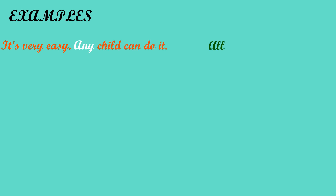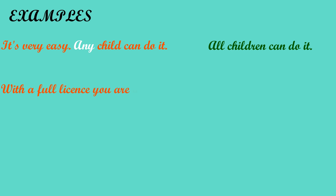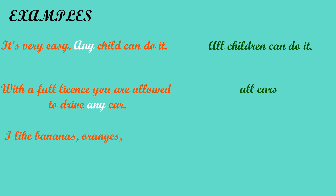Let's have examples. It's very easy — any child can do it, meaning all children can do it. With a full license, you are allowed to drive any car, meaning all cars. I like bananas, oranges, apples — meaning any fruit, all kinds of fruit.